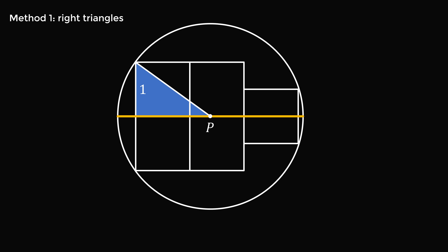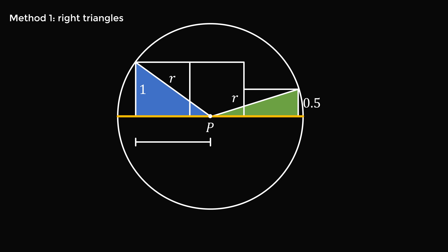We construct a right triangle on the left side whose hypotenuse equals r, and a green triangle on the right side where one leg is half the side length of the square, equal to 0.5, and the hypotenuse is the radius r. Let the distance from the left side of the 2x2 grid to center P equal x. The total horizontal distance of the 2x2 grid plus the one square is 3, so the remaining distance on the right is 3 minus x.